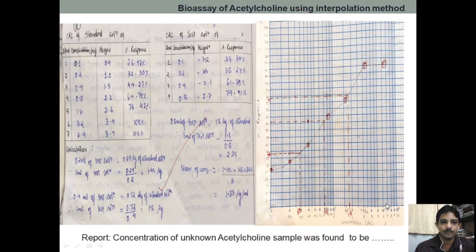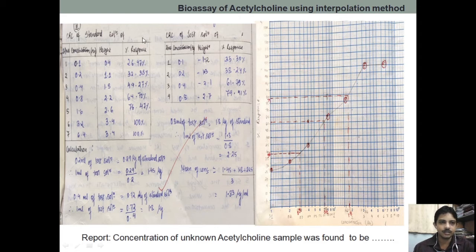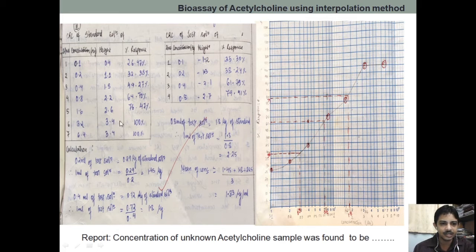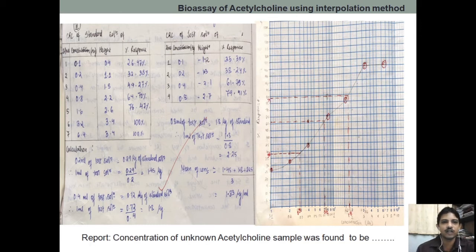Now I will show you an example of how we find the concentration of the test sample. This is the CRC of the standard acetylcholine solution with concentrations 0.1, 0.2, 0.4, 0.8, 1.6, 3.2, and 6.4, along with the height of the response. The highest is 3.4, so 3.4 is 100%. Then 2.6 and 2.4 are calculated by back-calculation to get the percentage response.